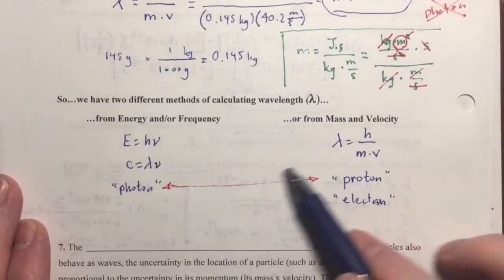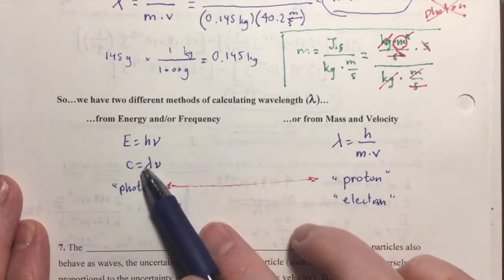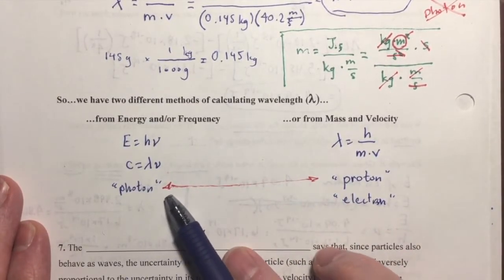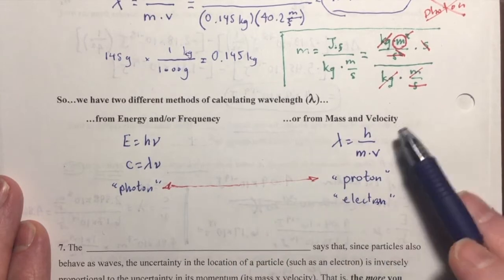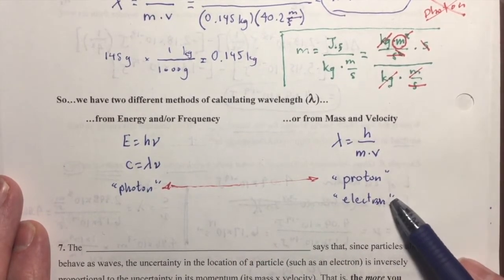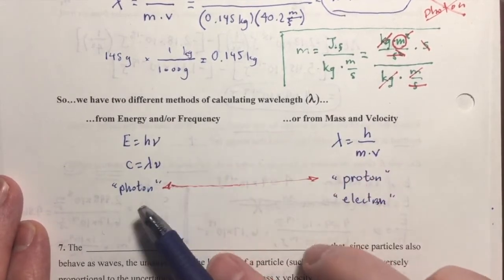So, you may recall that I showed you that there are two different ways to think about these wavelengths, depending on if we were talking about electromagnetic radiation, like a photon, or if we were talking about a particle with mass, such as a proton or electron, two different ways of calculating wavelengths.